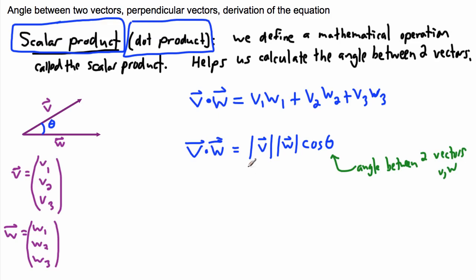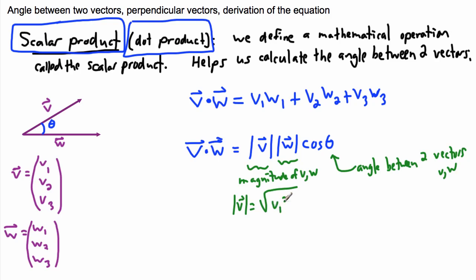Let's just remind ourselves what magnitude is. The magnitude of V — and of course of W — is found like this: the magnitude of V is the square root of V1 squared plus V2 squared plus V3 squared. And of course the magnitude of W is the same way: square root of W1 squared plus W2 squared plus W3 squared.